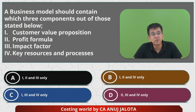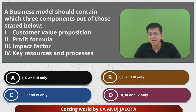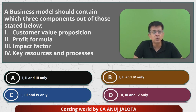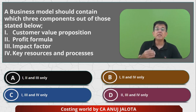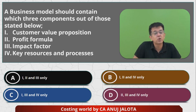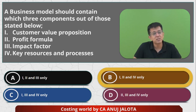So our question was: which three out of four components should a business model have? Obviously value proposition is right in the center. The profit formula is present in the form of revenue and cost structure. Impact factor does NOT come as part of the business model — your strategies are never mentioned in your business model, because once leaked, competitors will start using them. Key resources and processes are obviously part of the business model. So the answer is one, two, and four — option B. See you in the next lecture with another MCQ. Take care, happy learning, bye!